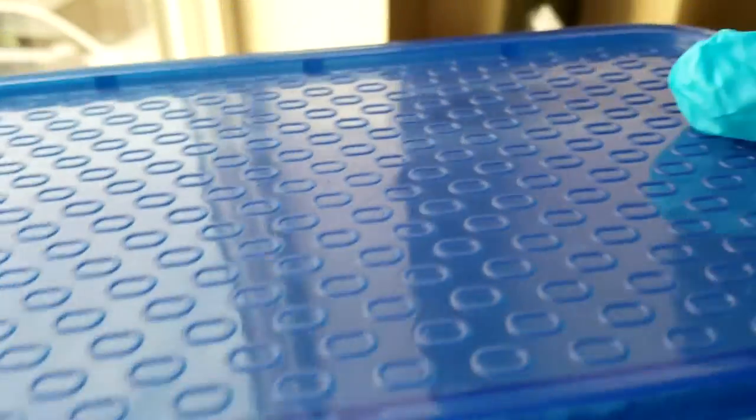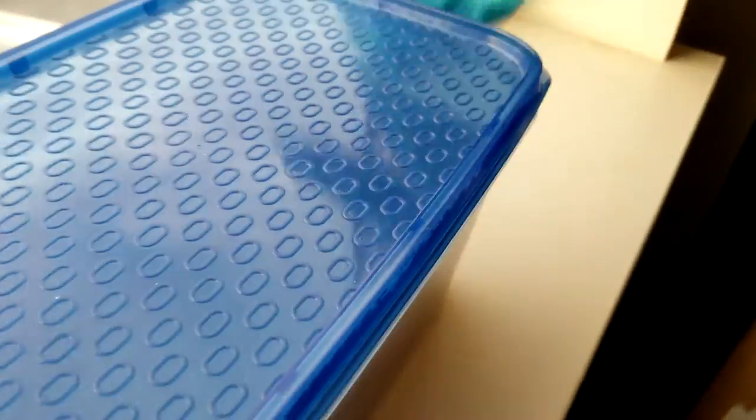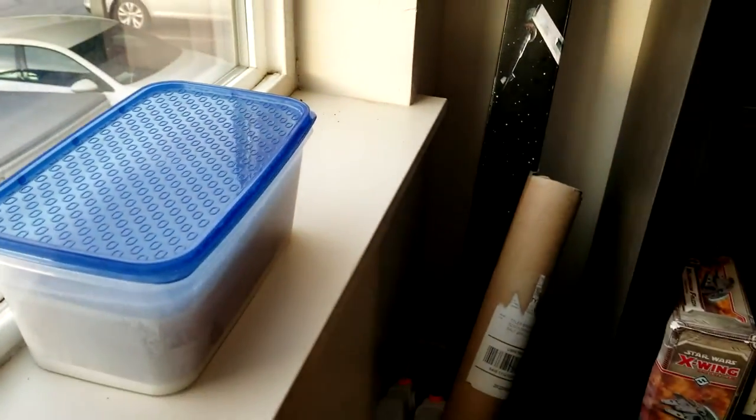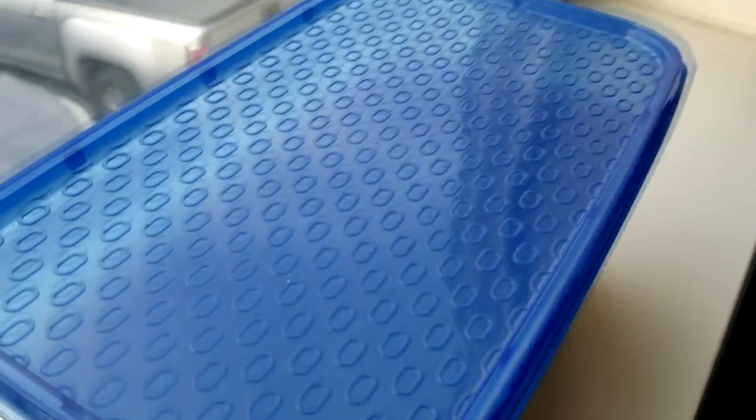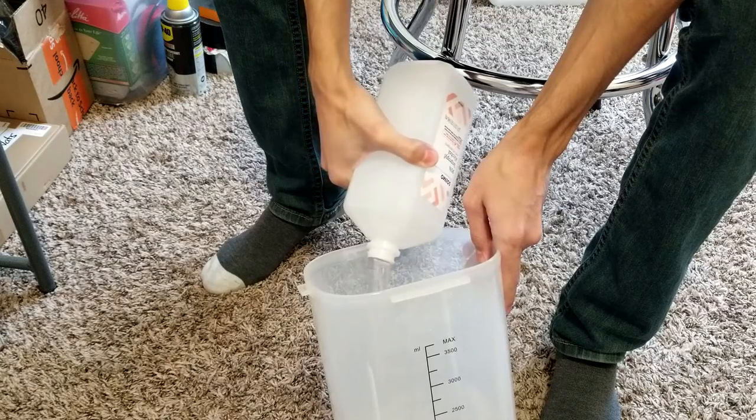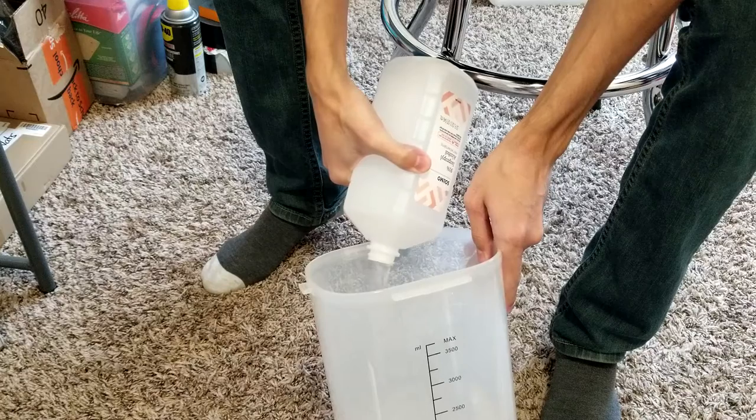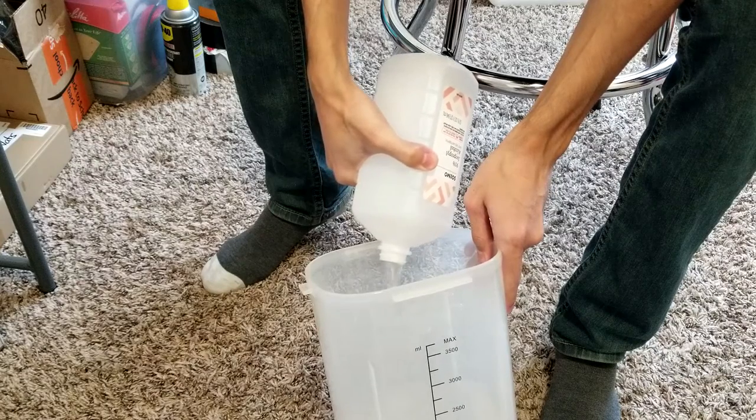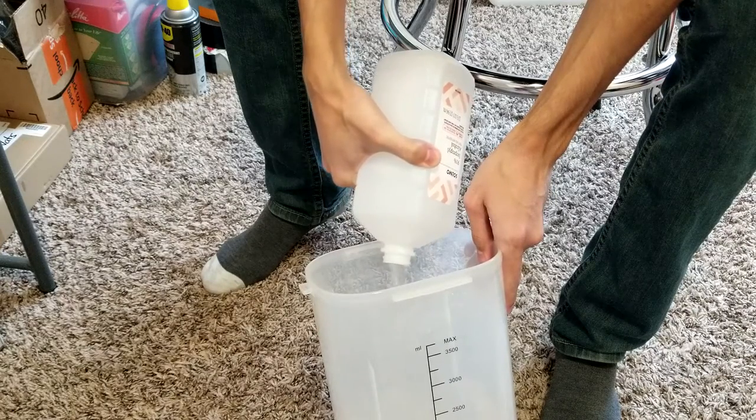I literally changed my alcohol only once or twice a year now. And when I do, I only have to change out the dirty bath. The medium bath and the clean bath cycle down. They become the dirty bath and the medium bath. And I pour myself a new clean bath with 91% or higher isopropyl alcohol. Now I've got three baths again.